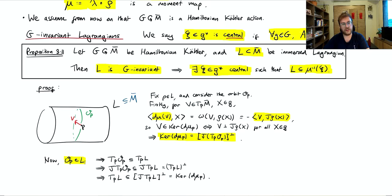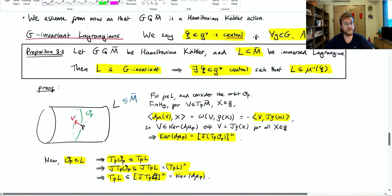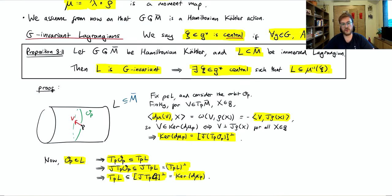Since L is G-invariant, the orbit is contained in L, so the tangent space of the orbit is contained in the tangent space of L. Therefore J of the tangent space of the orbit is contained in J of the tangent space of L, which equals the normal space to the Lagrangian by definition of a Lagrangian submanifold. Taking orthogonal complements, the tangent space of L is contained in the perpendicular complement of J of the tangent space of O_P, which by the first equality equals the kernel of dμ. So the kernel of dμ equals the tangent space of the Lagrangian.